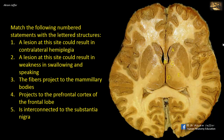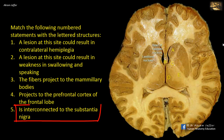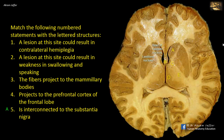Match the following numbered statements with the lettered structures. This is a horizontal section of the brain at the level of the interventricular foramen. A is the large head of the caudate nucleus projecting into the anterior horn of the lateral ventricle. The caudate nucleus together with the lentiform nucleus form the corpus striatum, which has reciprocal connections with the substantia nigra. Thus A matches with 5: interconnected to the substantia nigra.